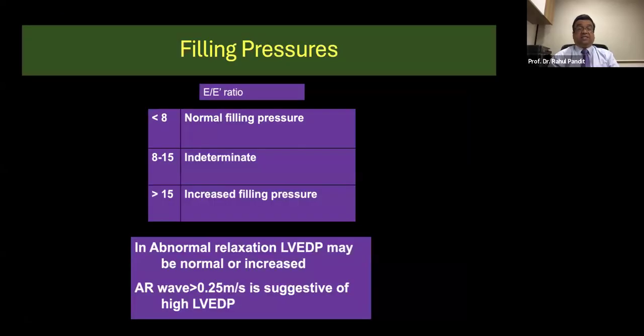So with this guys I think we can come up with some filling pressures here. So if your E upon E prime ratio is more than 15 you could say that there is a good chance that this patient is adequately filled more than adequate to fill and there are increased filling pressures.